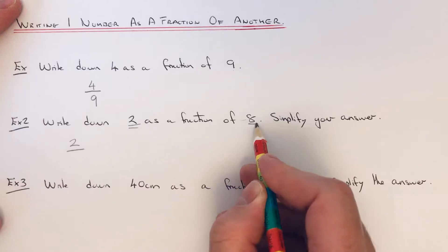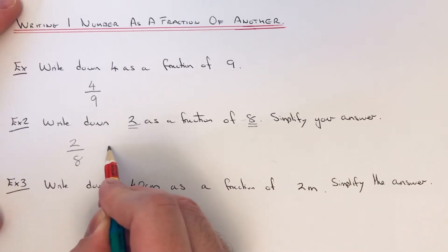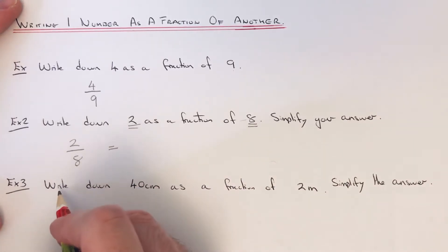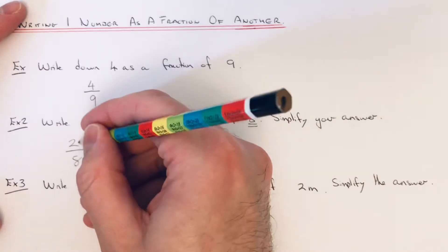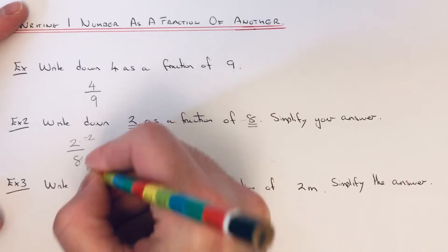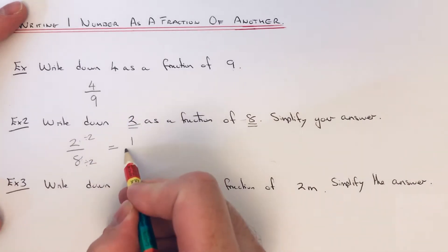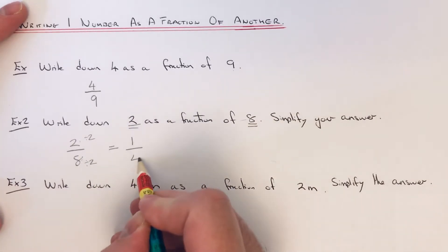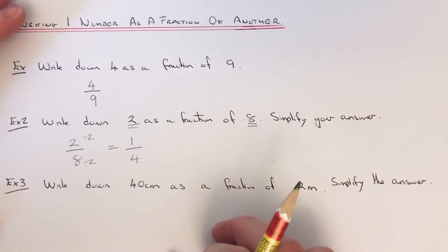We need to simplify this because they are multiples of 2. So if we divide by 2, 2 divided by 2 is 1, 8 divided by 2 is 4. So our final answer is one quarter.